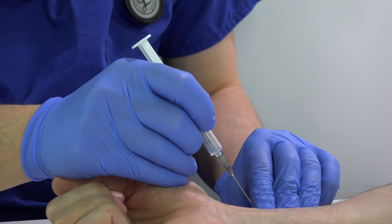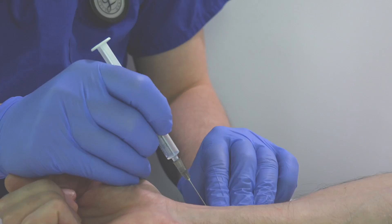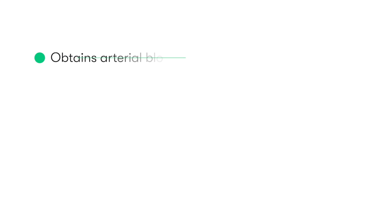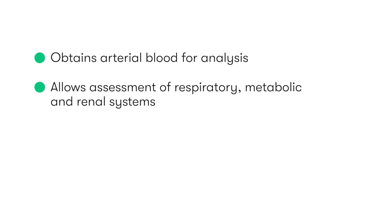Arterial blood gas sampling, or ABG, is a commonly performed procedure that involves the direct puncture of an artery to obtain an arterial blood specimen for analysis. It allows us to assess gaseous exchange levels within the blood, related to the functions of the respiratory, metabolic, or renal systems.